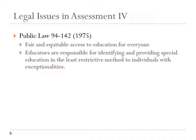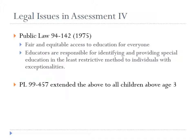An extension of this law in 1986 was Public Law 99-457, which essentially took 94-142 and expanded it. Now the same rights and privileges were extended to children ages 3 to 5, so it covered preschool as well.